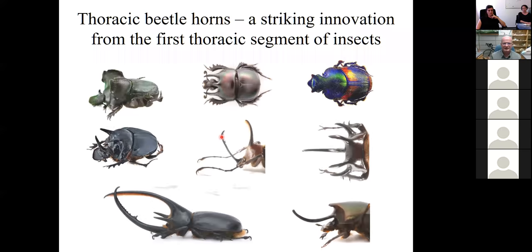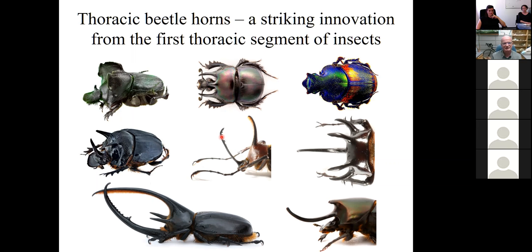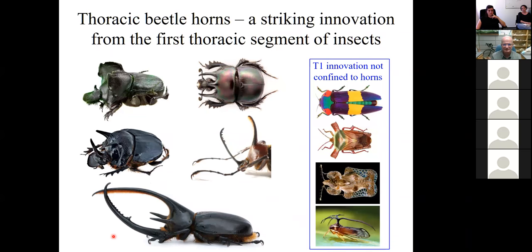Let me set the stage. I want to impress upon you that thoracic beetle horns are an example of a striking innovation from the first thoracic segment. Here are exemplars of thoracic horns that are all spectacular in their own way. They can be singular, they can come in pairs. But the other thing I want to impress upon you is that they're just one example of the many types of innovation that you can see emerge from that segment. There can be crazy color patterns, samurai-like shoulder extensions. Somehow the first thoracic segment seems to be a bit of a hotspot of innovation.